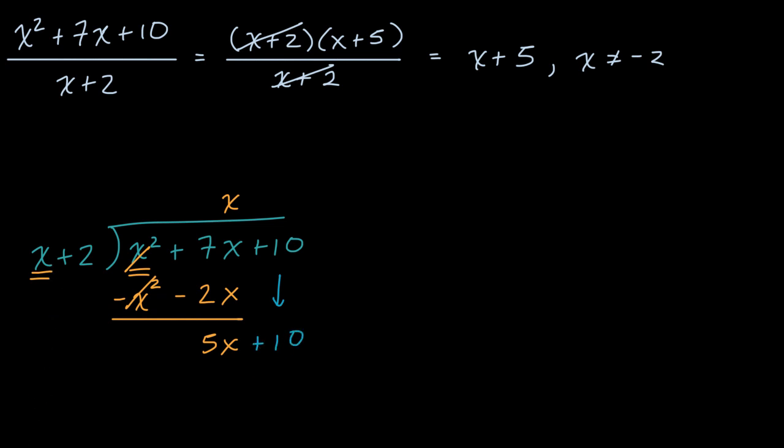And once again we look at the highest degree term. X goes into five x five times. That's a zero degree, it's a constant. So I'll write it in the constant column. Five times two is 10. Five times x is five. And then I'll subtract these from what we have up here. And notice we have no remainder.